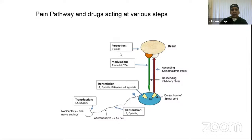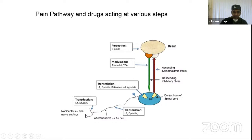These drugs can act at different levels. At the cerebral level — the level of perception — opioids usually work. They can modulate in the pathway, which is what tramadol and tricyclic antidepressants do. At the point of transmission at the root level, local anesthetics, opioids, ketamine, and alpha-2 agonists can work. At the level of transmission of peripheral nerves, local anesthetics and opioids are used. And at the transduction level where nociceptors and free nerve endings are available, non-steroidal anti-inflammatory medications and local anesthetics can work.